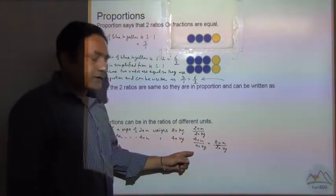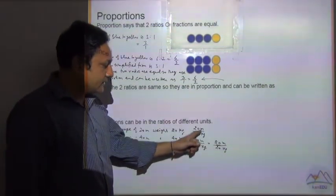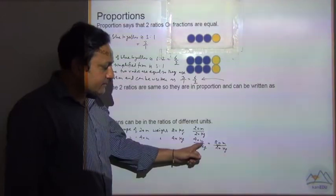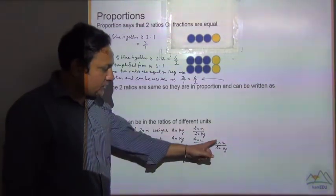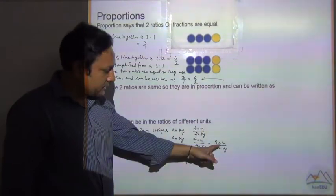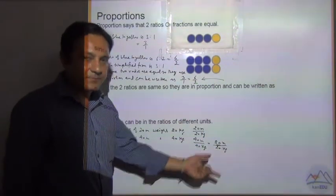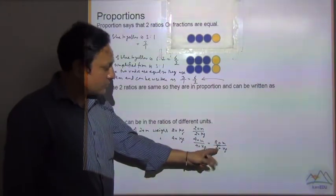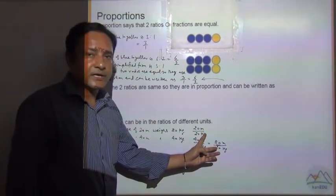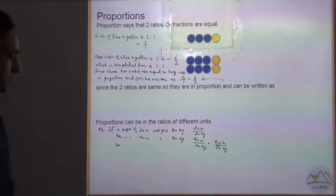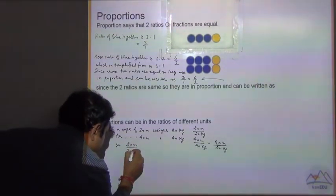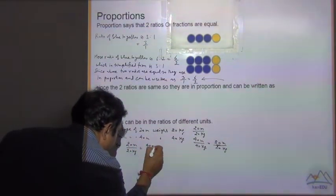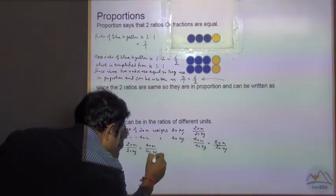What I said is you cannot cut it - it means you can cut the numbers but units cannot be cut. You can cut it with a prime number. In simplified form we can further simplify, we can further divide it by 2. But now these two ratios are equal. 20 meter divided by 20 kg is equal to 40 meter divided by 40 kg.